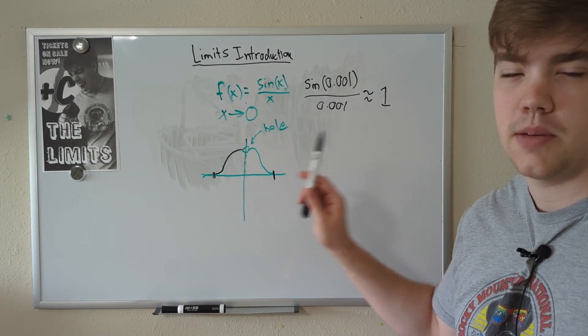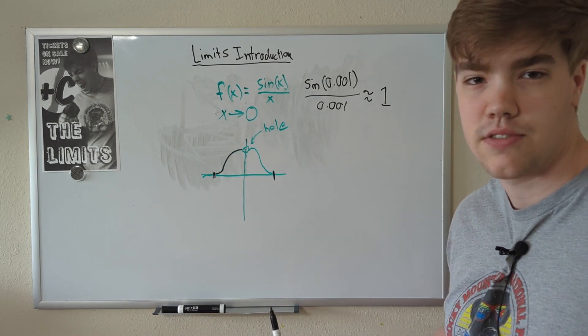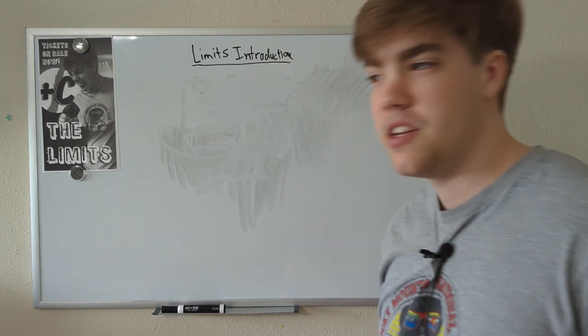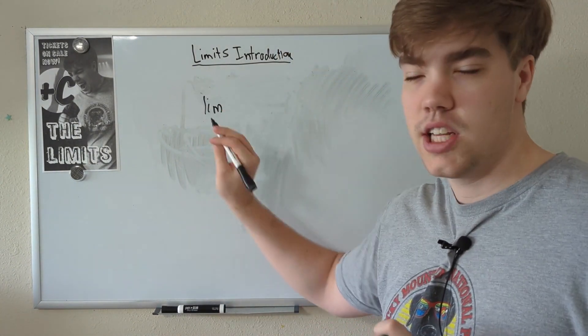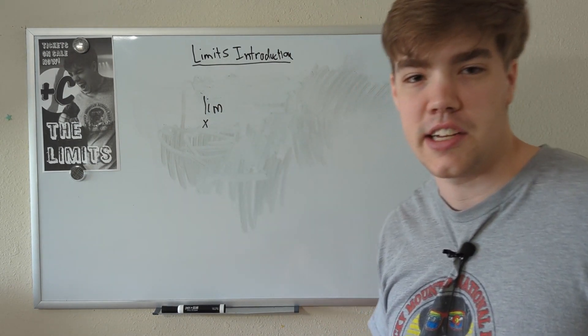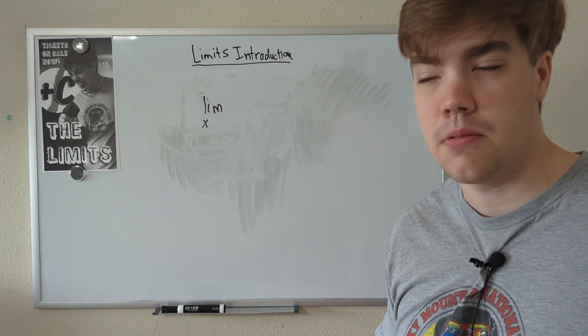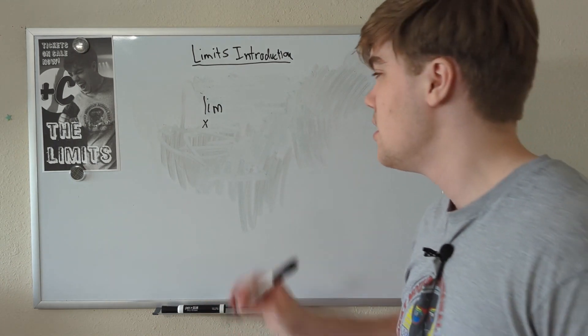Before we go too much further, I do want to talk about limit notation, because there's a certain way you're supposed to write down these problems, and I haven't been doing that so far. So, here's limit notation. We write LIM. That stands for limit. And then, right underneath that, we write x, or whatever variable we're using. It could be z. It could be y. It could be a Greek letter, like alpha or something. It could be anything.